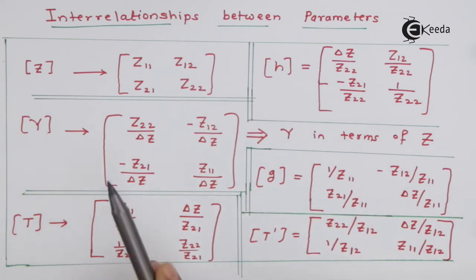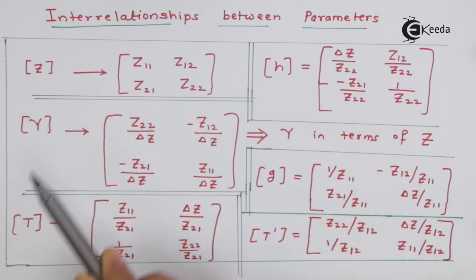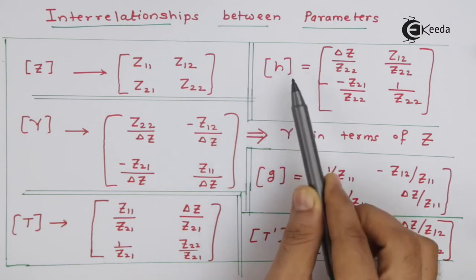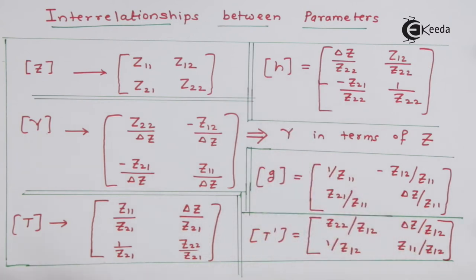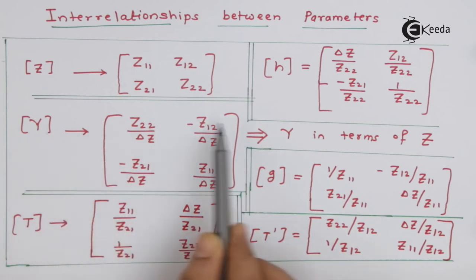Reverse also can happen and this happens with all individual parameters. So if Y is in terms of Z, Z can be in terms of Y also and vice versa, or T can be in terms of T', G can be in terms of H and vice versa. But we will only see one example and prove these particular matrices, and the rest is naturally left as an exercise.